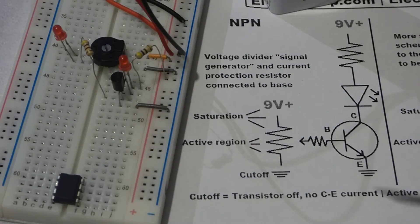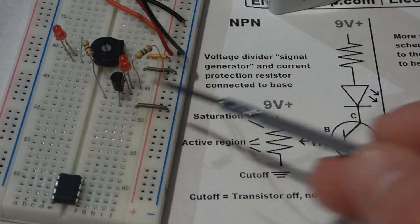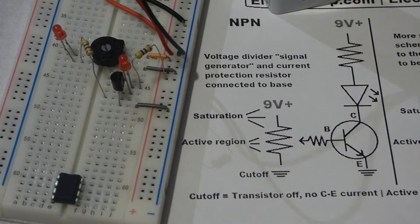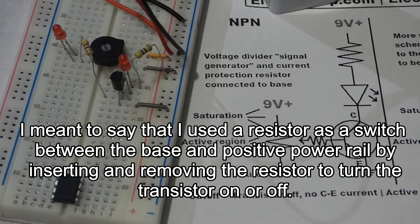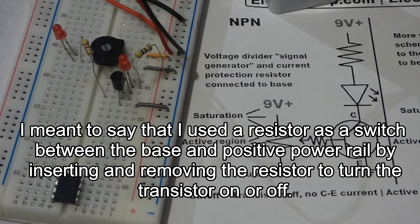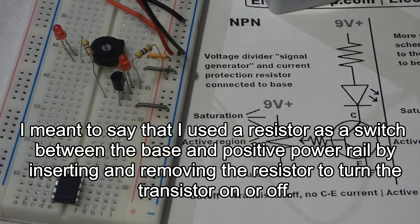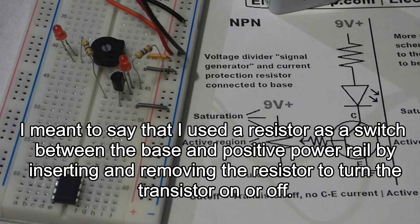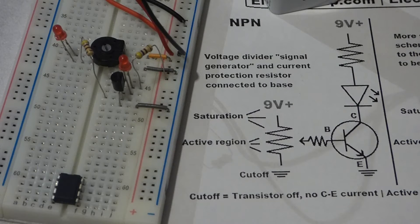In my last video, I used the bipolar junction transistor as a switch by inserting or removing the LED to the base. The collector current turned on or off. Now we're going to expand on that a little bit. We're going to use this circuit to demonstrate the transistor as an amplifier.